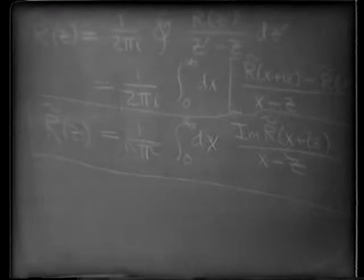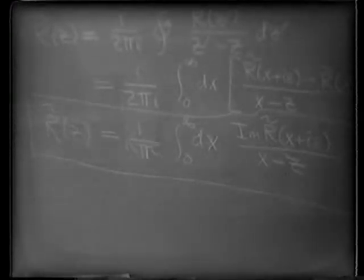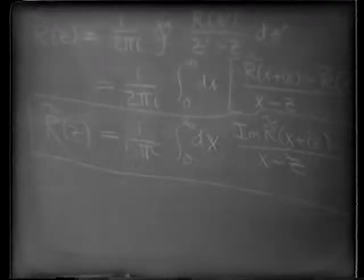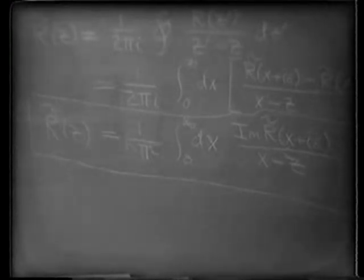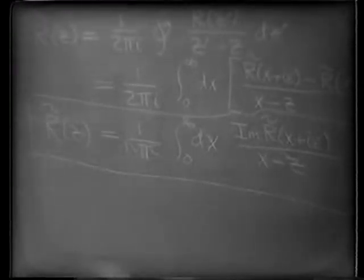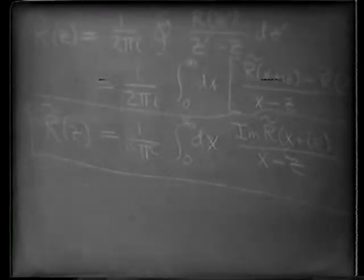From this one can deduce many properties of black boxes — for example, that it's impossible to build a perfect filter, that is a band-pass in a certain region and zero outside that region in frequency space — easily from this equation. For if it vanishes outside a certain block along the real axis, its imaginary part vanishes outside that block, but then the real part doesn't vanish outside that block, because it's given by an integral over the imaginary part.